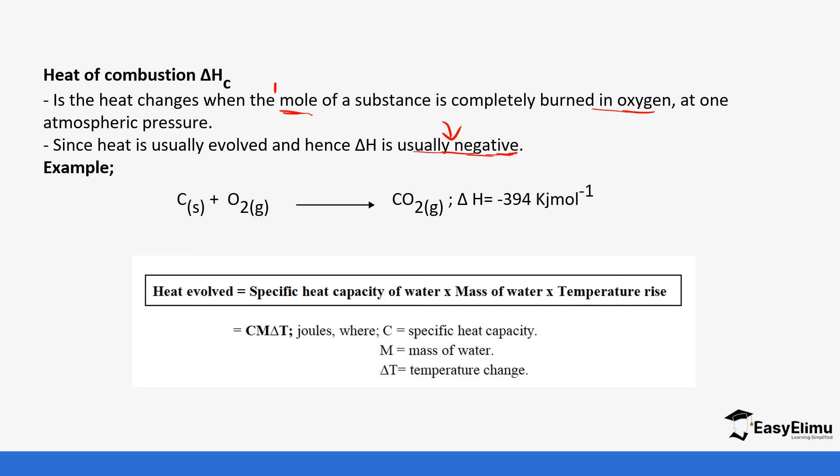An example of heat of combustion is when you burn carbon in air we produce carbon dioxide and 394 kilojoules of energy is given off in one mole and you can see the values are negative. We usually call this the thermochemical equation. We'll be doing a lot of thermochemical equations not just a normal chemical equation that is balanced but also with the heat change so it makes it a thermochemical equation.